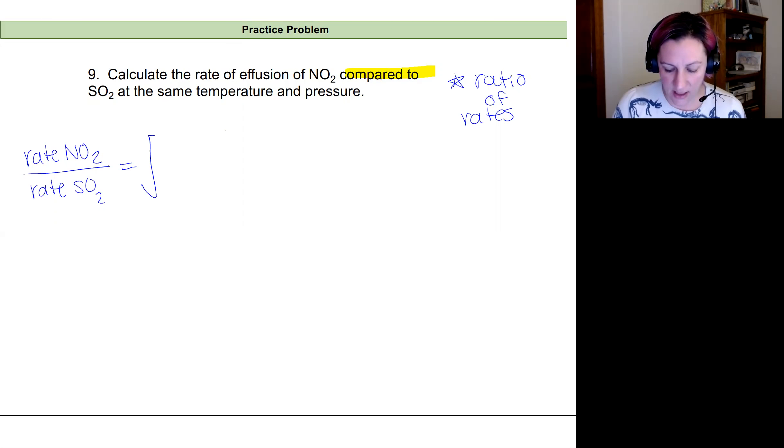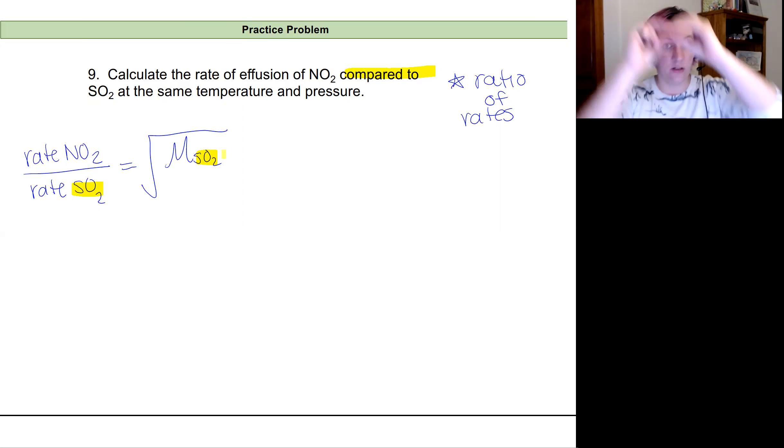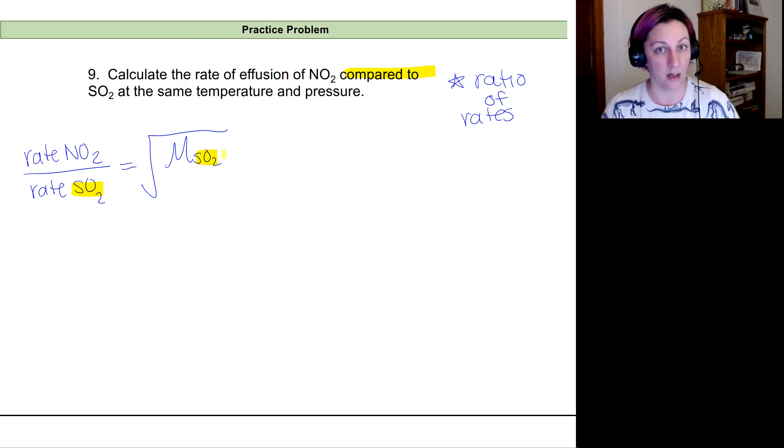So this is going to be equal then to the molar mass of sulfur dioxide on the top. Remember, we always have these opposite each other. So the sulfur dioxide is in the denominator, so it's in the numerator on the other side of the equality. Divided by the molar mass in kilograms of NO2. We'll highlight those as well.